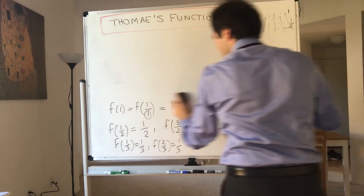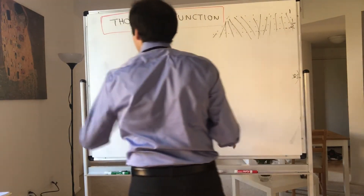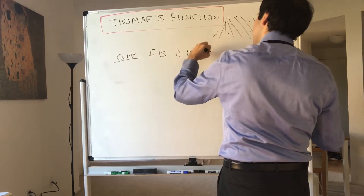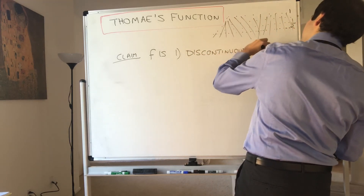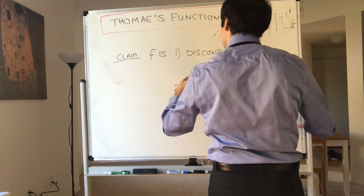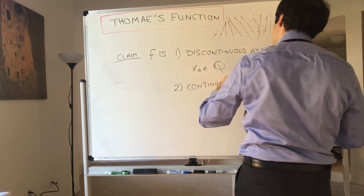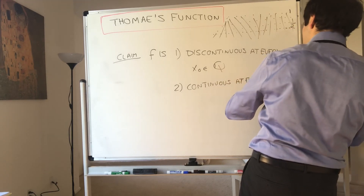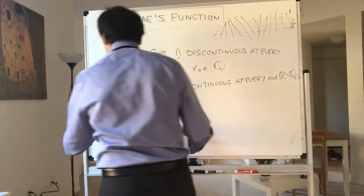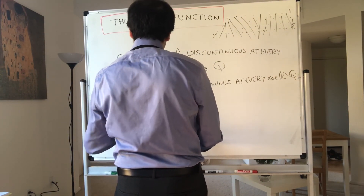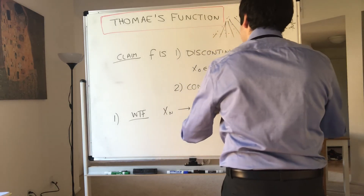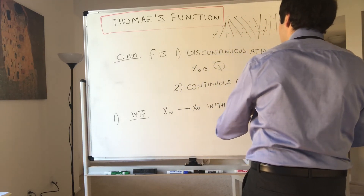So claim: f is — first let's do the easier part — it's discontinuous at every rational x-naught, and continuous at every irrational number in ℝ\ℚ. How do I prove this? For part one it's much easier, because all we need to do is find a sequence xn converging to x-naught with f of xn not converging to f of x-naught.